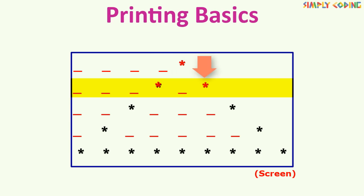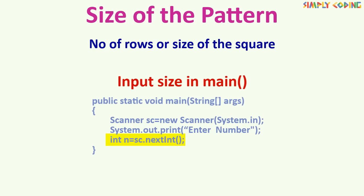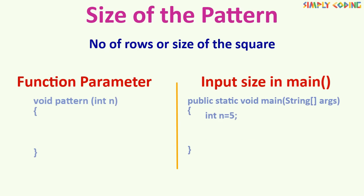Let's get started with square patterns. The first thing in a pattern program is that you would typically be given a size — size means how big, or what is the size of a square. Either you could be asked to write in main and take the size from the user using any input class like Scanner, or if you are writing a function, this n could be passed to you as a parameter. If you are already given the size in the question itself, you can just directly assign it to a variable n. For our example we will consider that we have a size in variable n which has a value of 5.